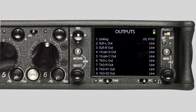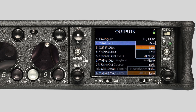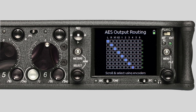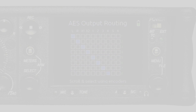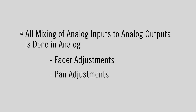The outputs menu provides quick access to all of the output options, including output signal level for each of the individual outputs, playback to output options, and AES output routing. When an output is set to send AES digital audio signals, the AES output routing matrix provides custom output routing flexibility to any of the AES channels. All mixing of analog inputs to analog outputs is done in analog, including fader and pan adjustments.